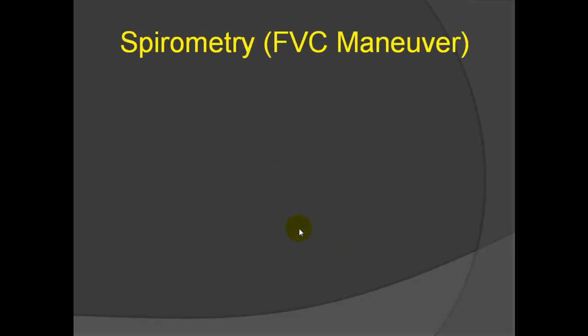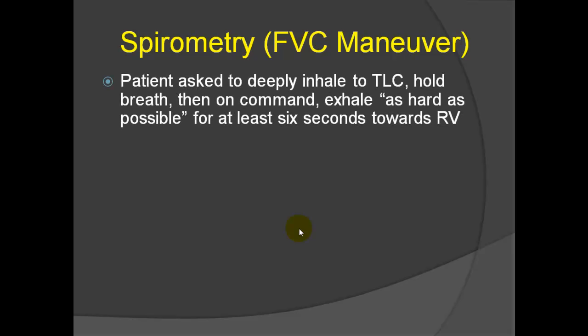Let's talk about the first pulmonary function maneuver, which we call a spirogram or spirometry, which is more formally known as a forced vital capacity maneuver. In the forced vital capacity maneuver, the patient is asked to deeply inhale to total lung capacity, then hold their breath, and on command, exhale as hard and as long as possible. We're hoping and expecting they can blow out for at least six seconds. As they exhale, they're approaching their residual volume.